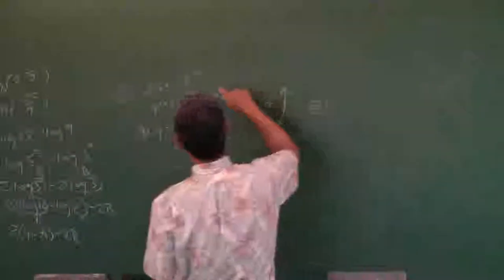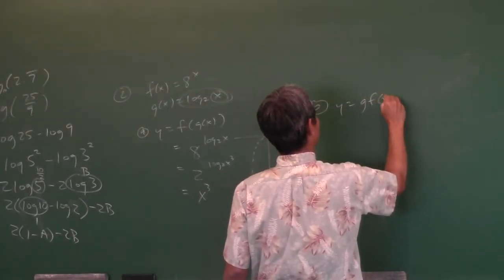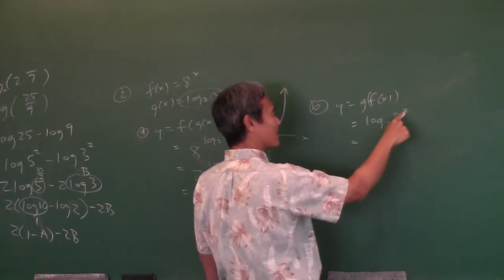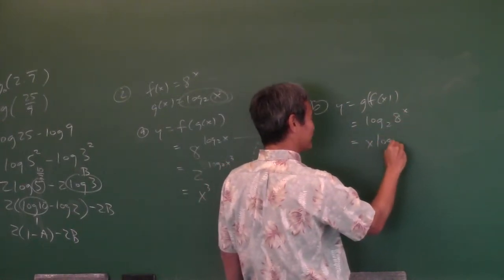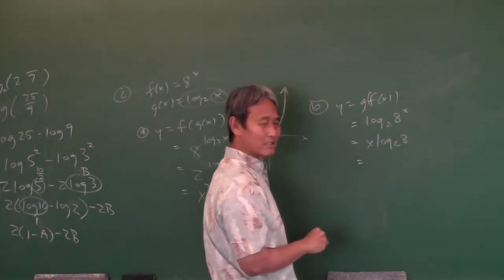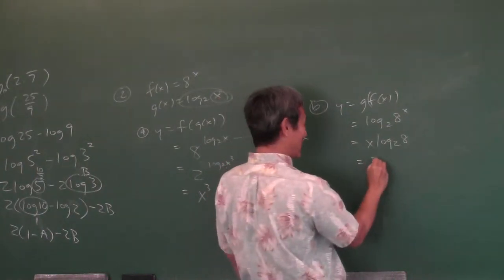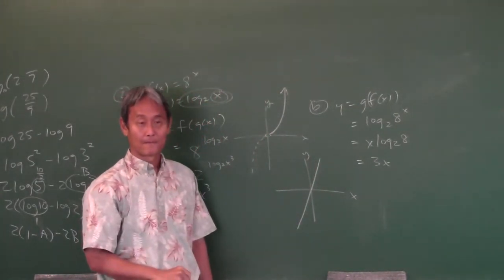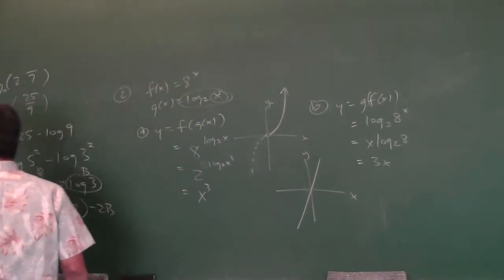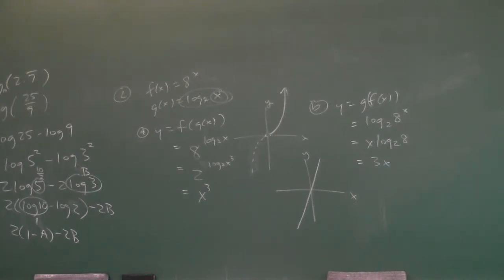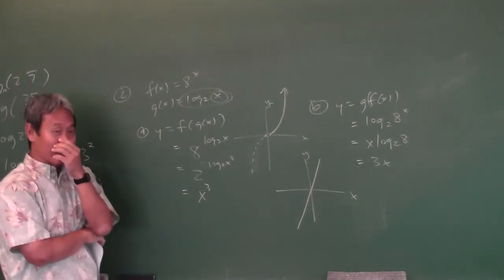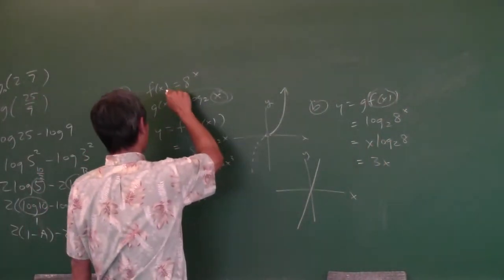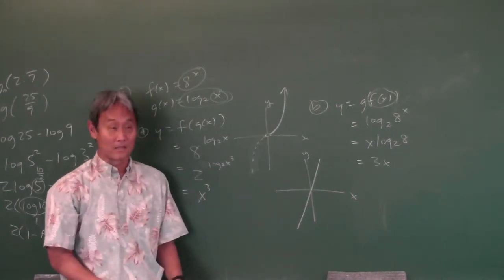And then B — you're graphing G of F of X. So you have to take F of X and plug it into G. So you've got log base 2 of 8 to the X. What can I do with the power? Put it in the front. And do we know what log base 2 of 8 is? 2 to the what power equals 8? 3. So that simplifies to 3X. Can I just graph Y equals 3X? Yes — that's the answer. Because the inner function F of X has domain all real numbers, that's why it is the whole graph.